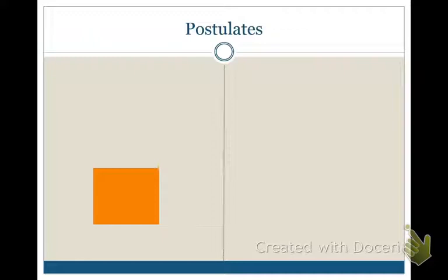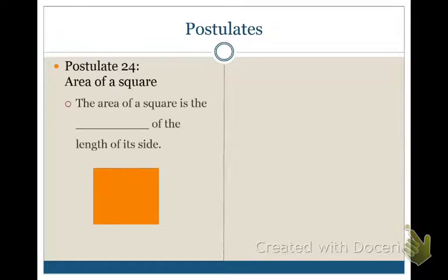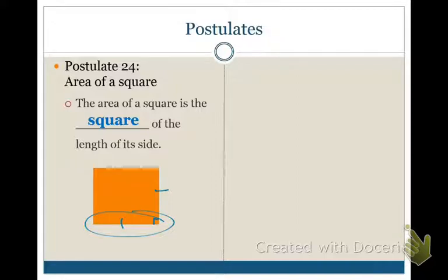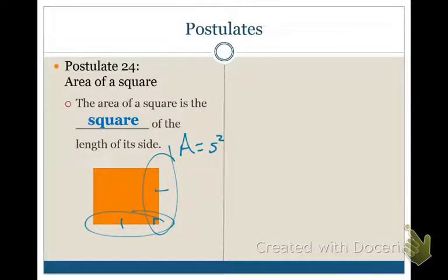Before we extend our conversation into all parallelograms and triangles, there are a couple of postulates and theorems to review. The first one is the area of a square. In a square, the base and the height end up being the same length because all sides are the same. So to find the area of a square, all you need is one side length and square it — side times side — instead of doing base times height like for a rectangle.